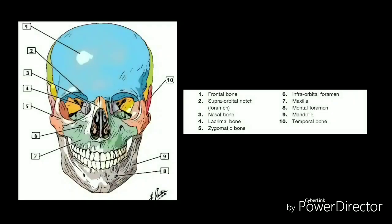Let us proceed to the head or the human skull, which is the part of the skeleton that supports the structures of the face and forms a cavity for the brain. The composition of the skull is comprised of 22 bones, which are divided into two parts of differing embryological origin: the neurocranium and the viscerocranium.